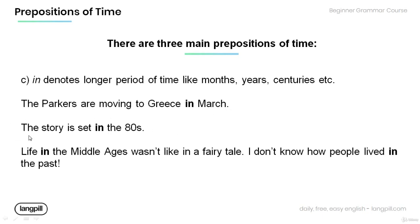And in the sentence: The story is set in the 80s. 'In' is used to denote the decade. Life in the Middle Ages wasn't like in a fairy tale. I don't know how people lived in the past. In these sentences, the prepositions of time 'in' are used to denote longer periods of time — the Middle Ages and the past.